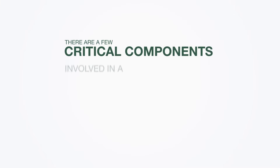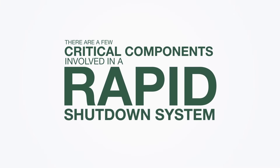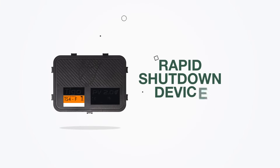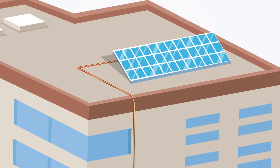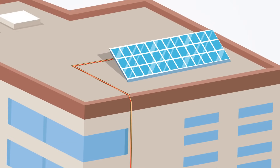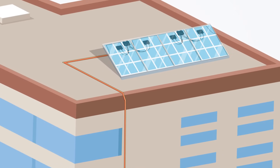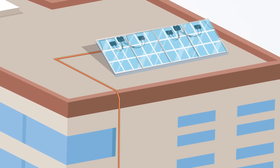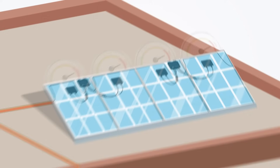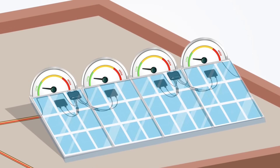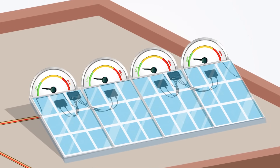There are a few critical components involved in a rapid shutdown system. First is a rapid shutdown device. Rapid shutdown devices are types of module-level power electronics that are installed on the back of solar modules. Upon receiving an initiation signal, they turn off or reduce the energy output from each module.